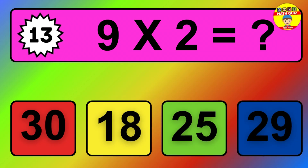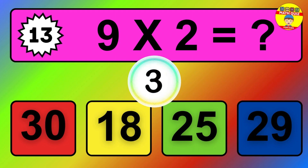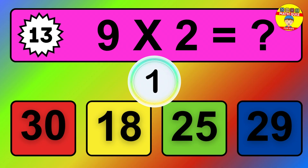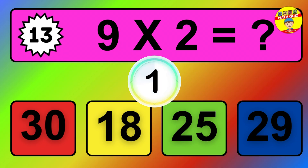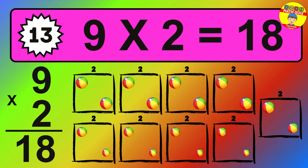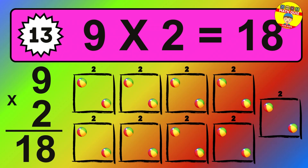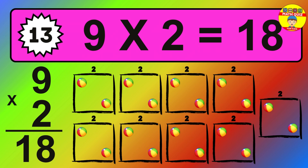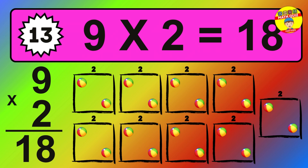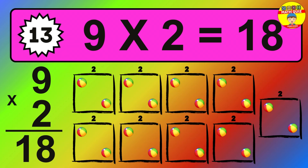Question thirteen: nine times two equals what? The answer is: nine times two is 18. To calculate, we have nine groups with two balls each one. So how many balls do we have? 18 balls.